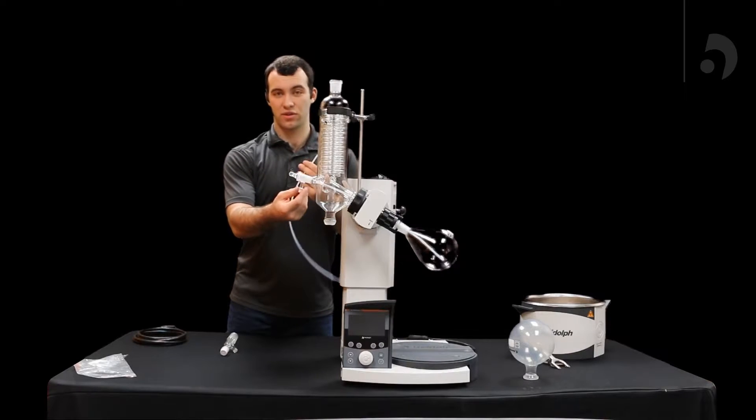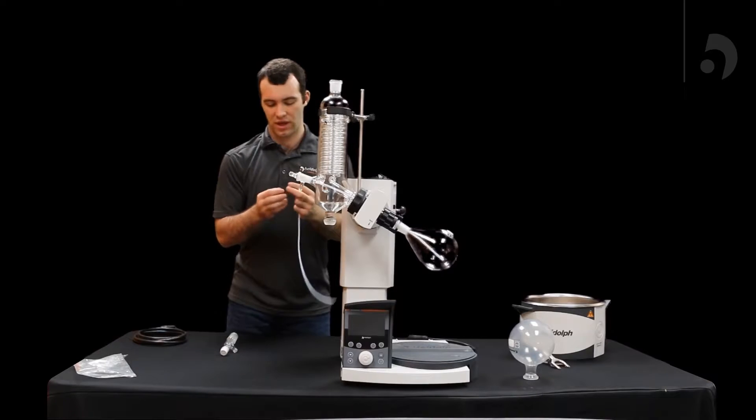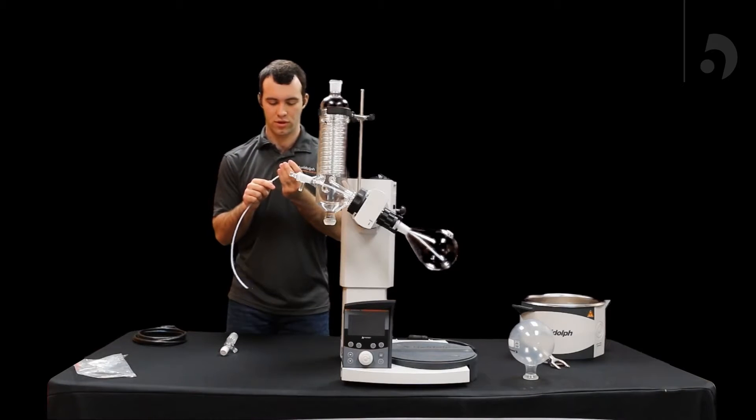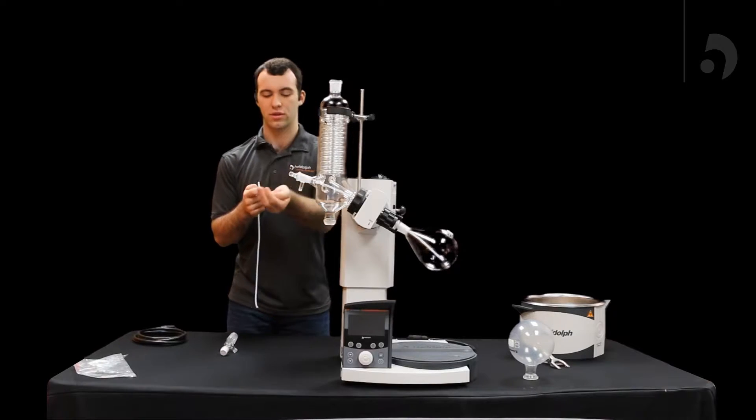Then, we're going to put in our inlet tube, going to unscrew this screw, and inside the screw, you will find a blue seal, just like that.